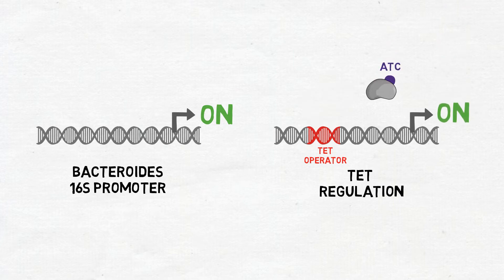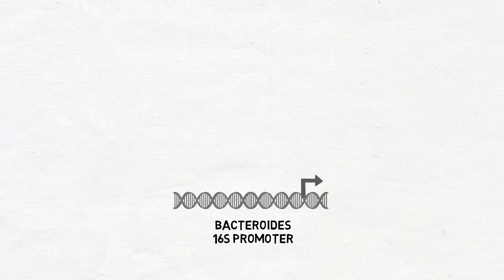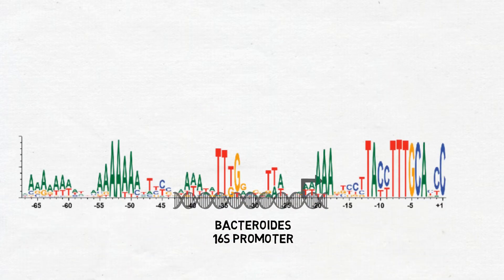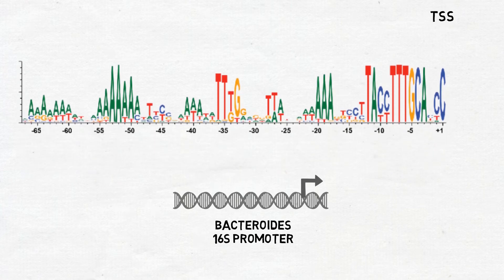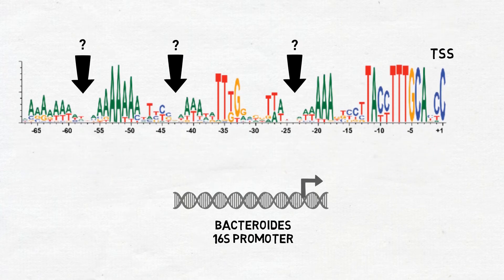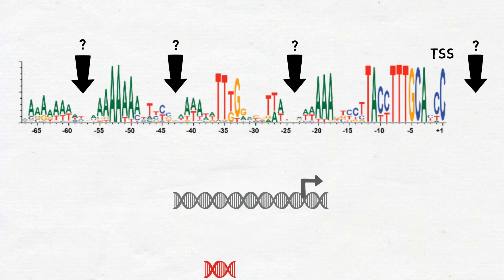The hard part was figuring out how to put these two pieces together. For this, we used sequence alignment to identify possible sites for inserting or substituting TET operators into the native gene promoter, then a lot of trial and error to see what worked.